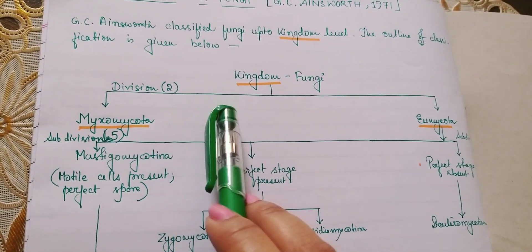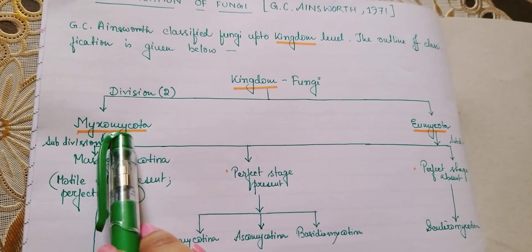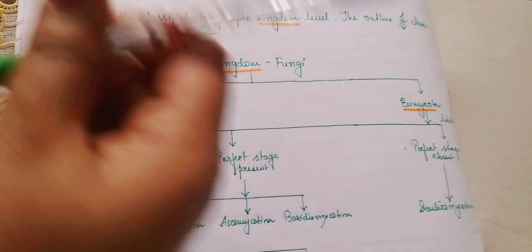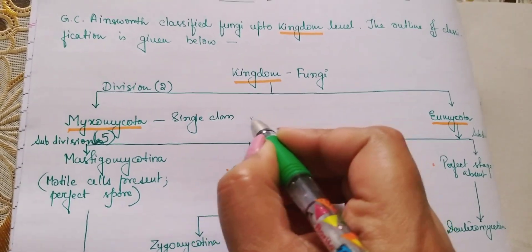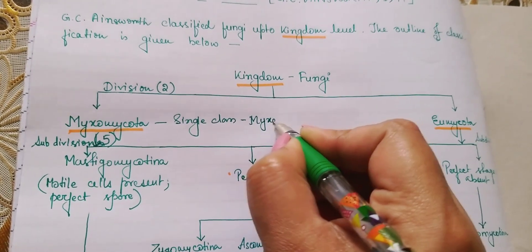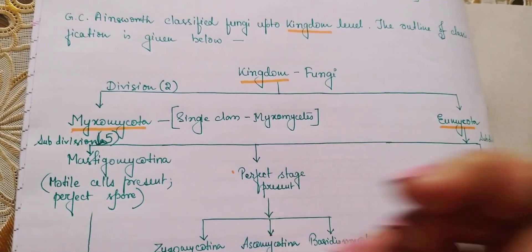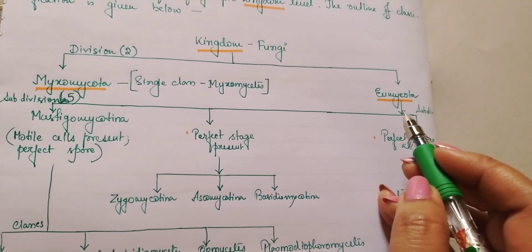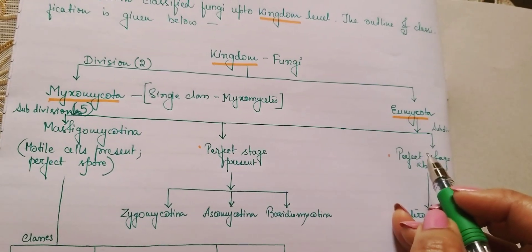Kingdom Fungi is broadly divided into two divisions: one is Myxomycota and the other is Eumycota. Myxomycota has got only one class — Myxomycetes. Remember, Myxomycetes is a single class under Myxomycota.